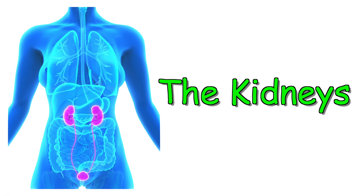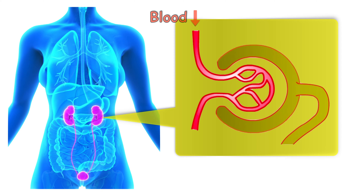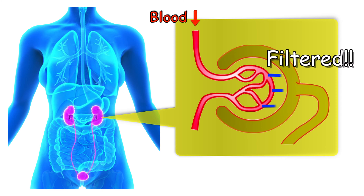The kidneys are an example of a biological filter. Kidneys filter the blood, removing excess wastes and fluids.